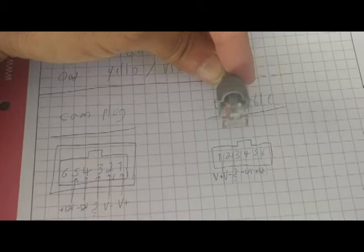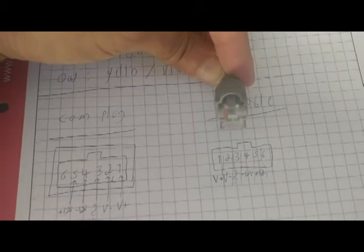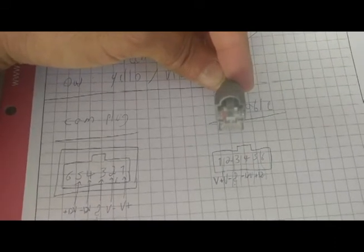Number two is negative video, number three is unknown or audio positive, number four is negative 12 volt, and number five is positive 12 volt.